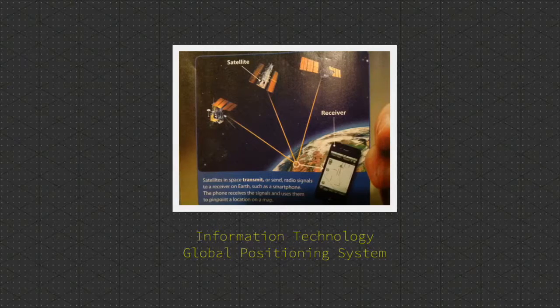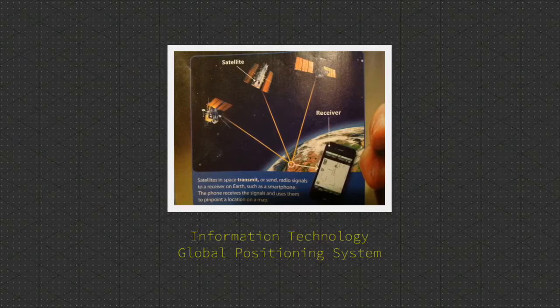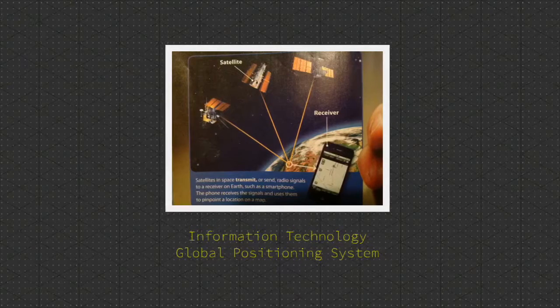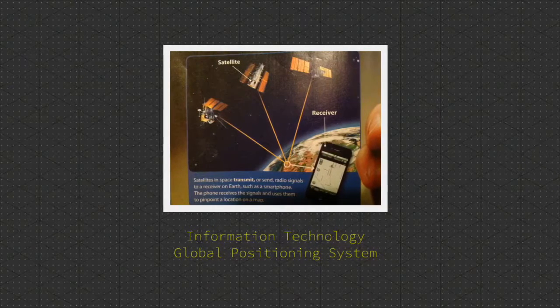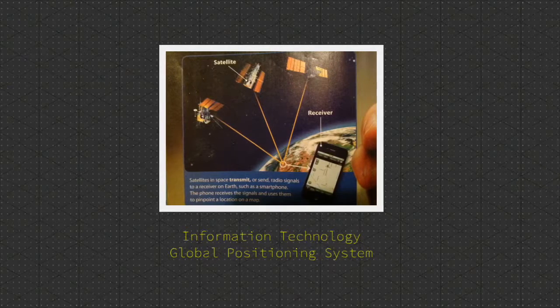Digital maps usually have a little dot showing exactly where you are. How does the phone know where you are? The phone uses GPS. GPS stands for Global Positioning System. This system can locate anything with a GPS receiver.